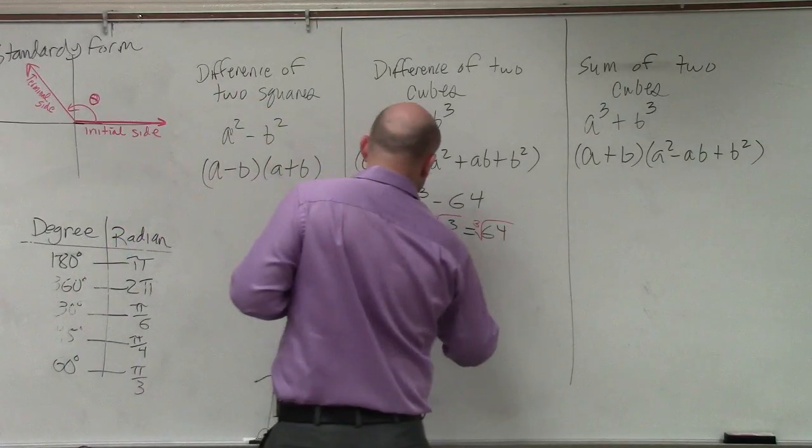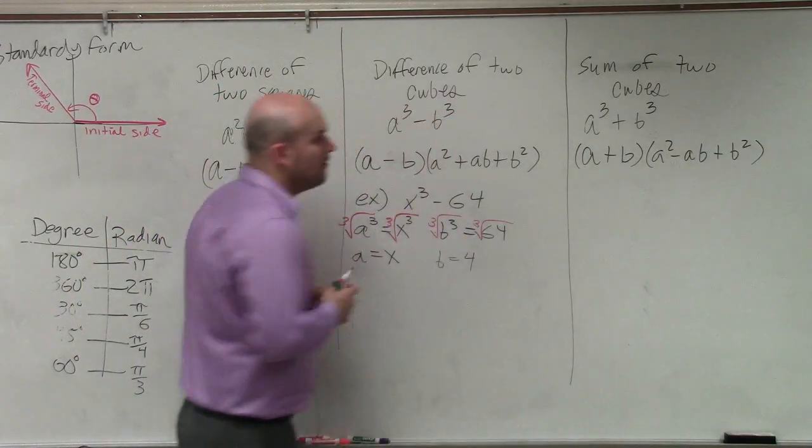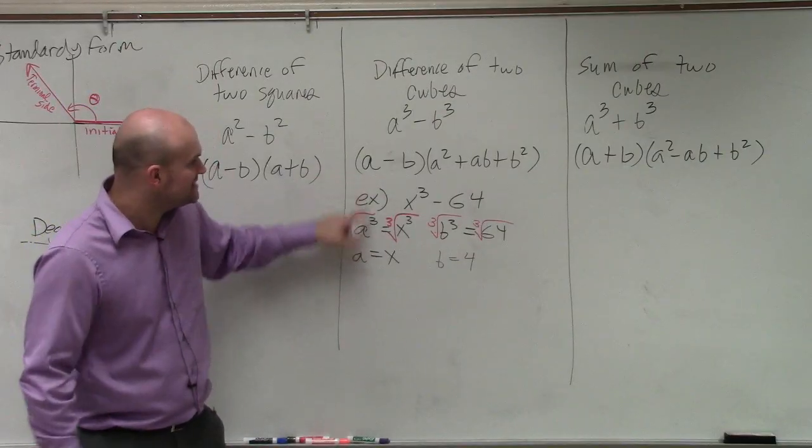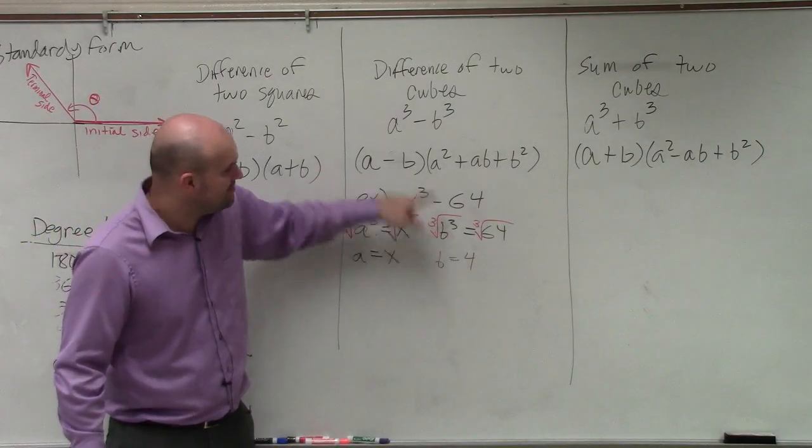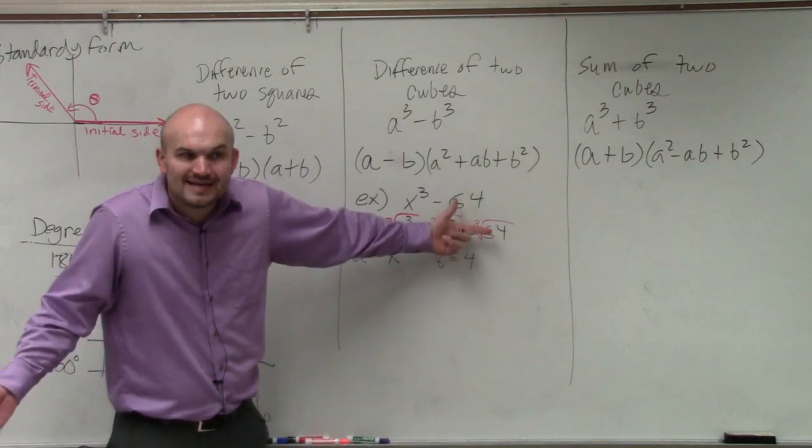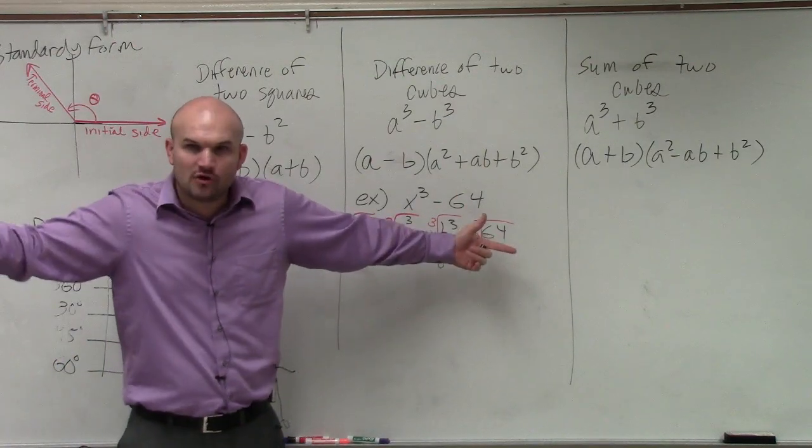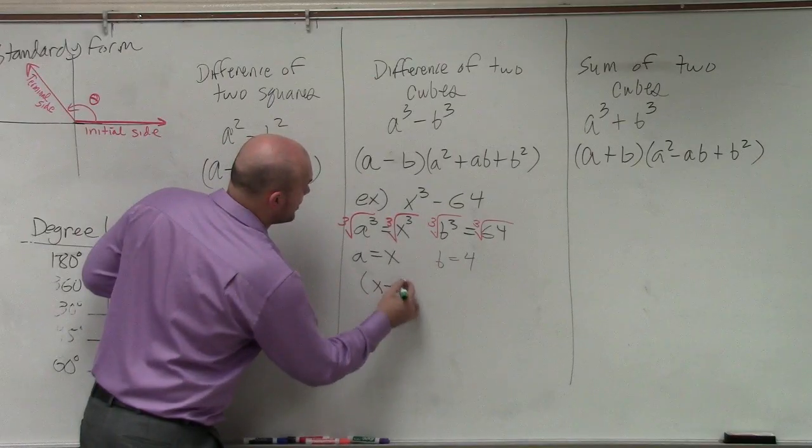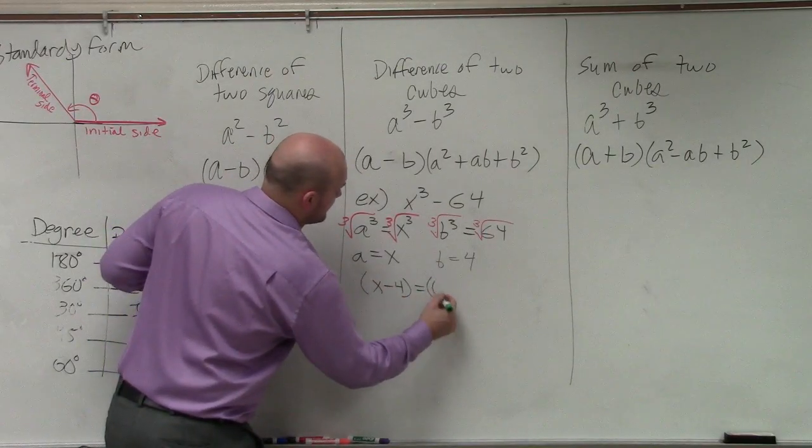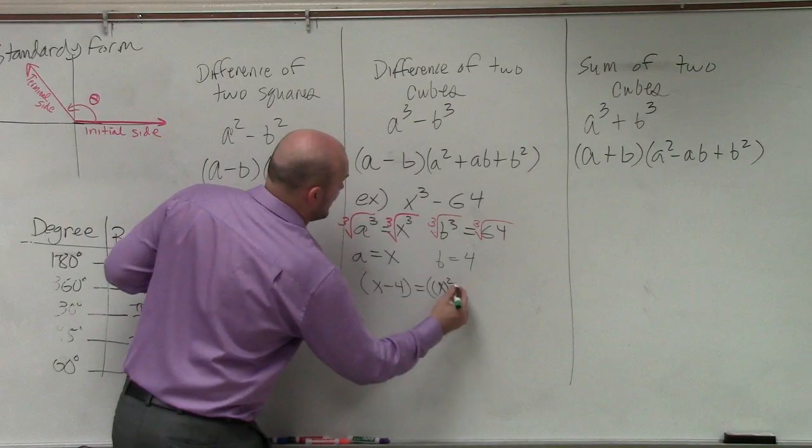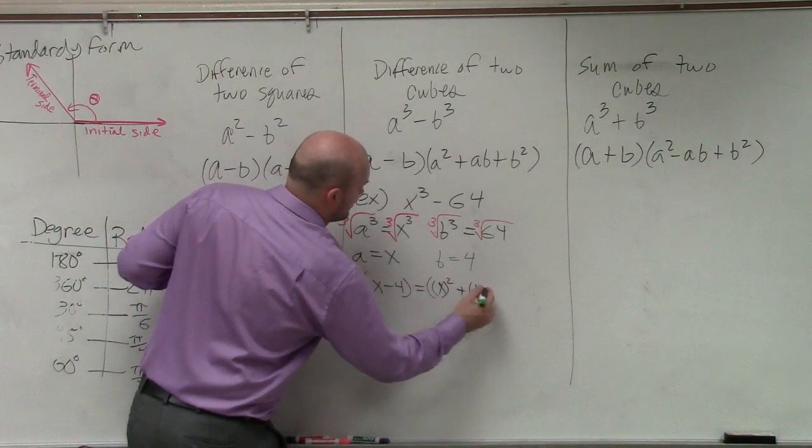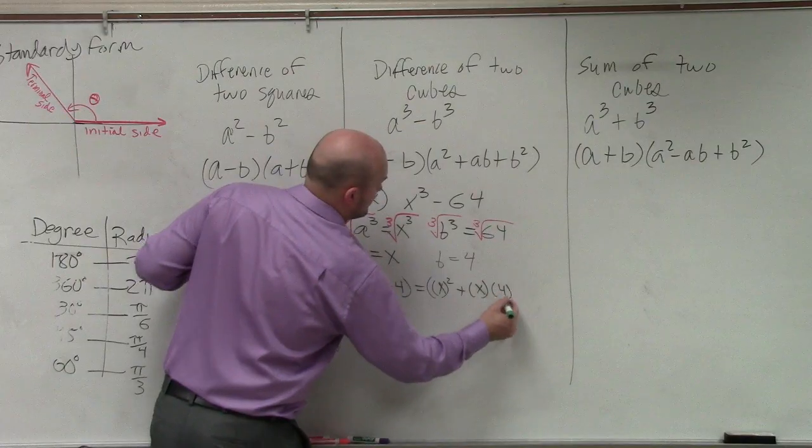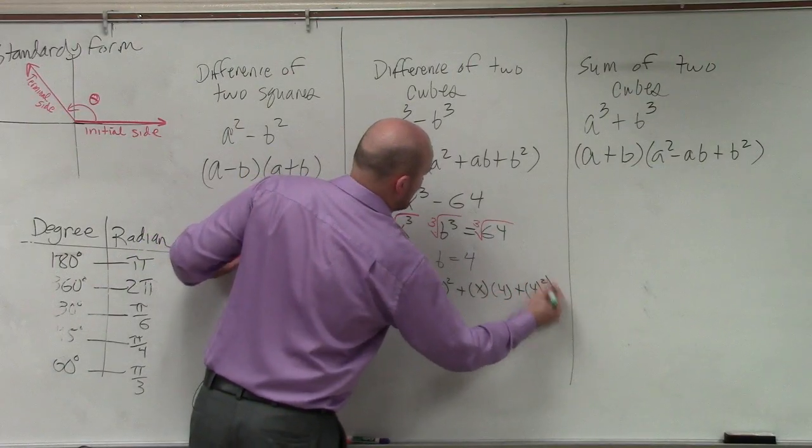So you can say, in this case, b is equal to 4. Now, to solve my problem, all I do is replace a with x and b with 4. That's all I'm going to ask you guys to do for half of your homework problems. So therefore, you're going to have x minus 4 is equal to x squared plus x times 4 plus 4 squared.